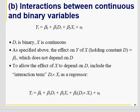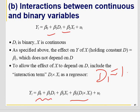If you have one binary variable and one continuous variable, they will have an interaction like this. When D1 is 0, the intercept is β0 and the slope is β2 only. When D1 is 1, the intercept changes to β0 plus β1, and the slope becomes β2 plus β3 times Xi. So both slope and intercept are different when you have one binary and one continuous variable with an interaction term.